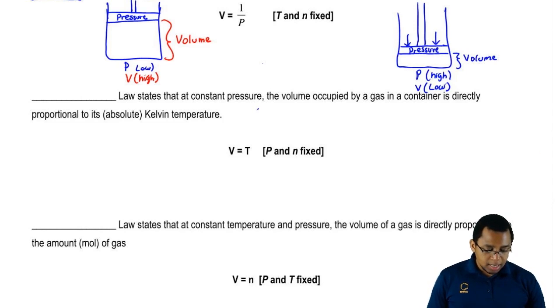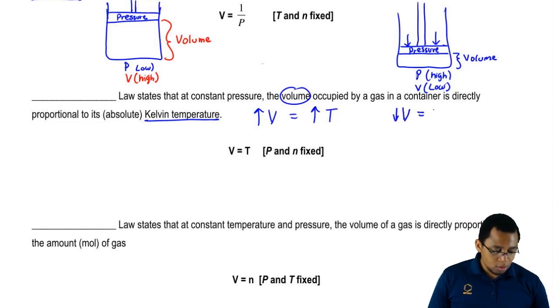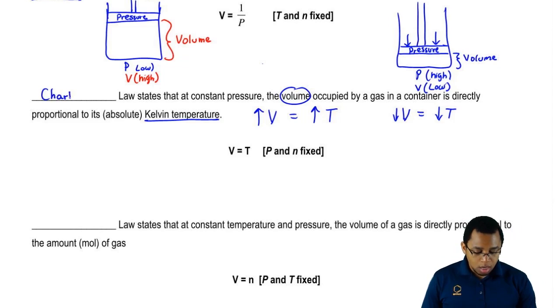All this means is volume and your Kelvin temperature are directly related. If your volume increases, then your temperature is increasing. If your volume is decreasing, your temperature must be decreasing. We're going to say that this is known as Charles' Law.